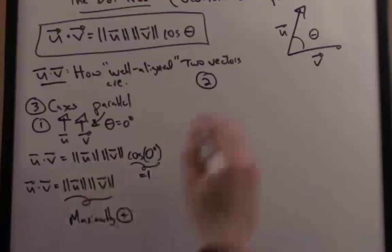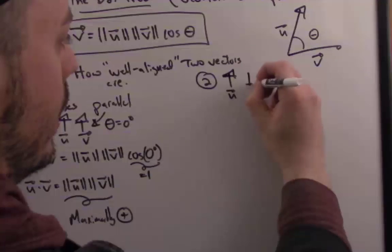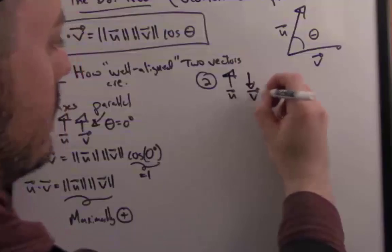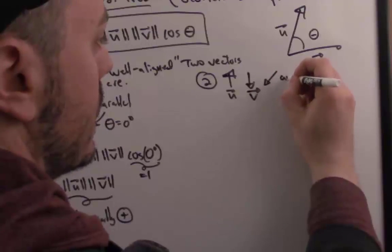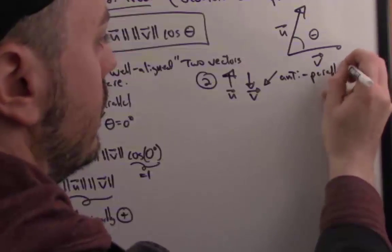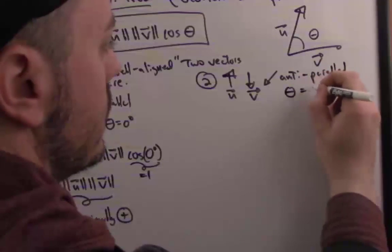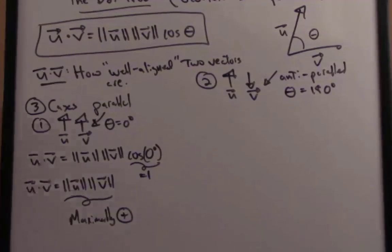For a second case, how about the opposite of that? If vector u and v are going in opposite directions, that would be the opposite case. You can say the vectors in this case are anti-parallel. And if you think about it, the angle between those two vectors is 180 degrees. They're going in opposite directions.